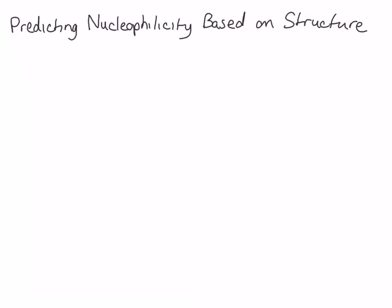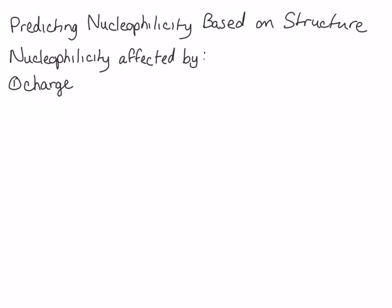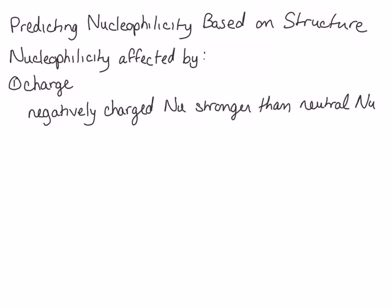The nucleophilicity, or strength, of the nucleophile is affected by several features. The first is the charge of the atom acting as the nucleophile. A nucleophile with a negative charge will be a stronger nucleophile than a similar neutral species, with all other things being equal. Another way to look at this is that a base is always a stronger nucleophile than its conjugate acid.